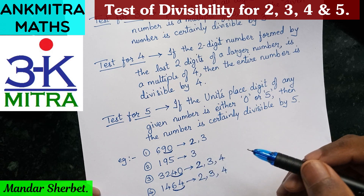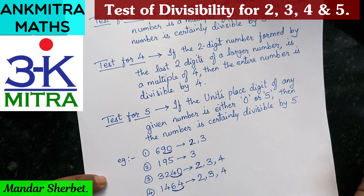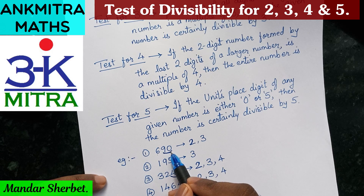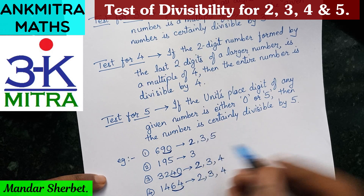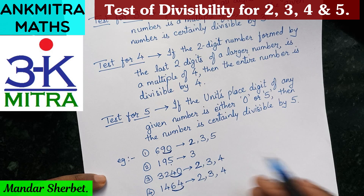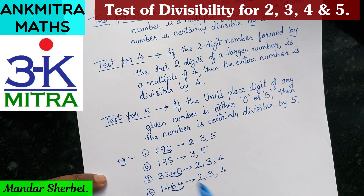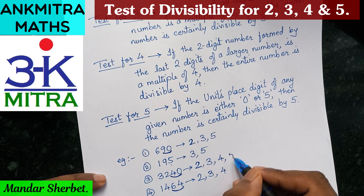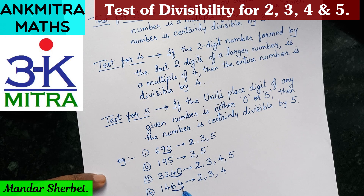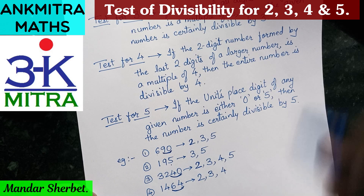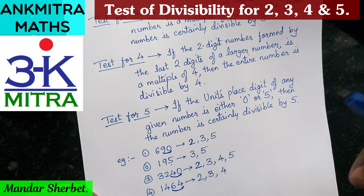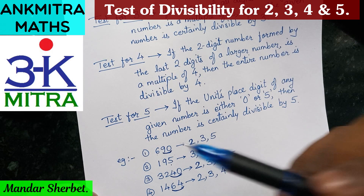Now let's apply the test for 5. We just check the units place digit. 690 has 0 in the units place — divisible by 5. 195 has 5 in the units place — divisible by 5. 3240 has 0 in the units place — divisible by 5. The last number does not have 0 or 5 in its units place — therefore not divisible by 5. With these examples, I hope the concept of divisibility tests for 2, 3, 4, and 5 is now clear.